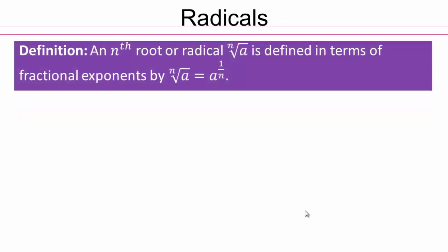Continuing our discussion of exponents, we are going to introduce a new symbol representing fractional powers — that's called radicals. An nth root, or radical, is written with a little n and a square root symbol. The nth root of a is defined in terms of fractional exponents: nth root of a equals a to the power of 1 over n. The denominator n in the exponent corresponds to this n in the radical symbol.